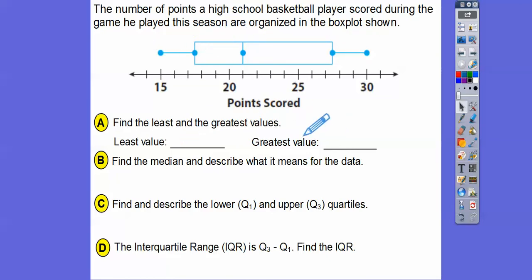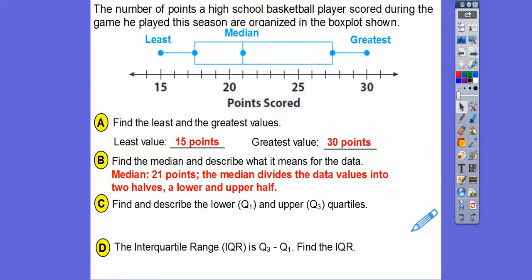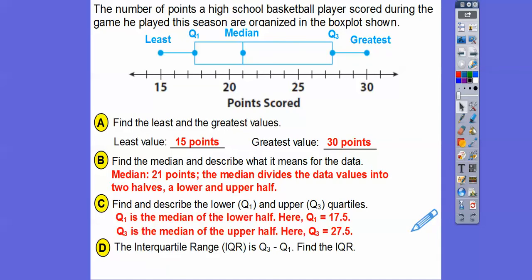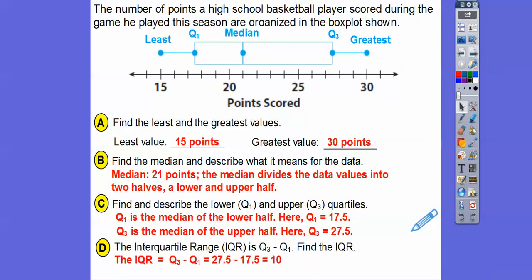The least value is 15 and the greatest is 30. The median is 21, and it divides the data values into two halves — the lower half and the upper half. The quartiles are 17.5 and 27.5. The interquartile range is Q3 minus Q1, so 27.5 minus 17.5 equals 10.